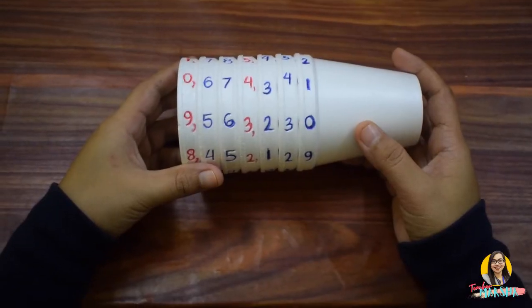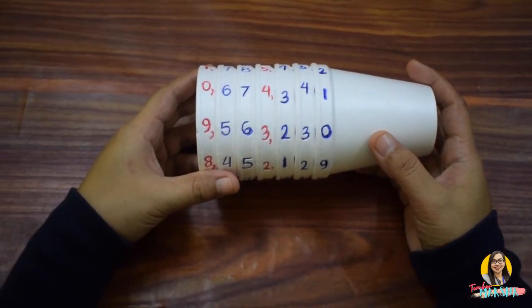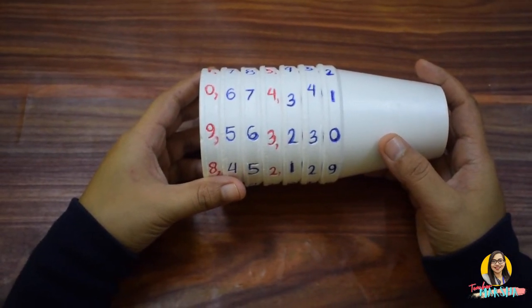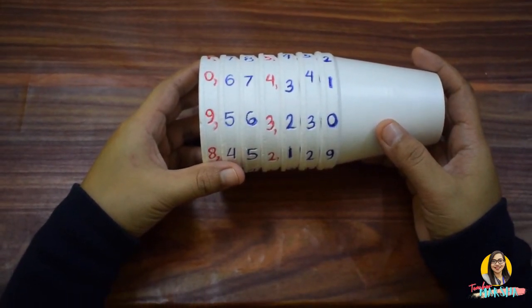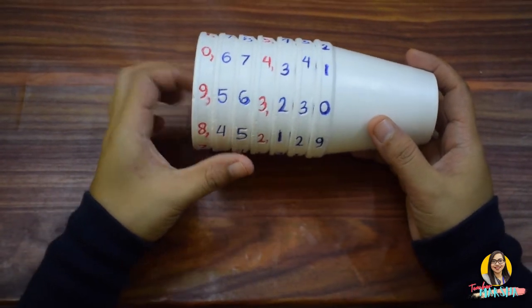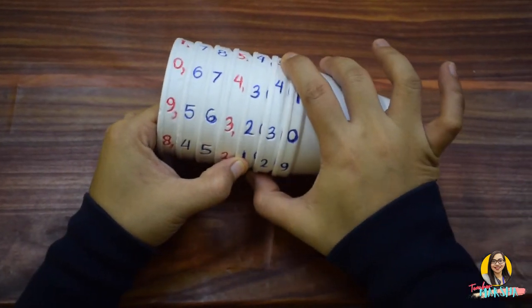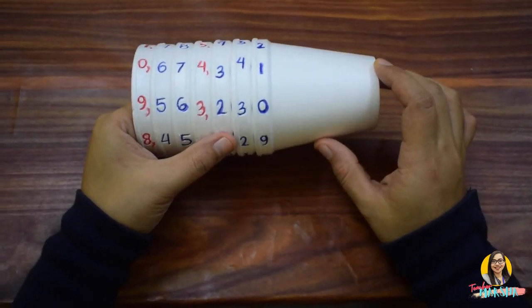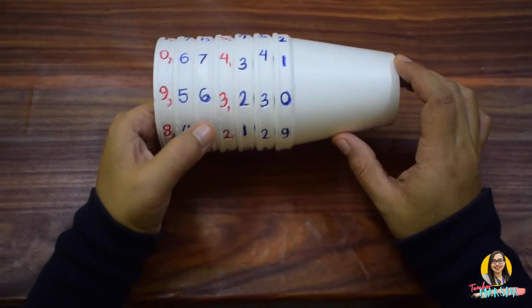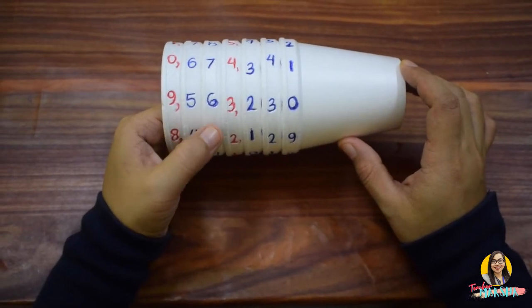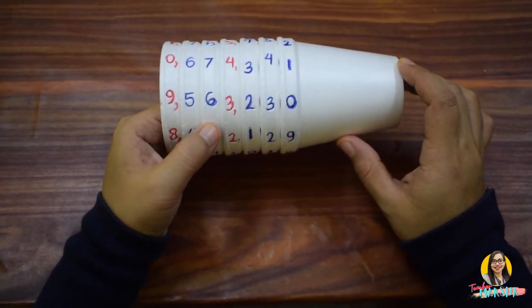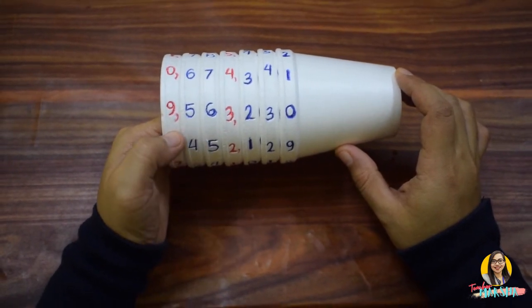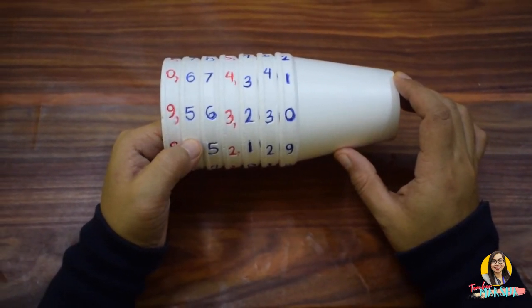This activity is good for all primary students since you can easily differentiate it according to your student's level. For example, for the first grade, you can teach them with reading tens. For the second and third grade, you can teach them hundreds and thousands. For fourth and fifth grade, you can teach them with ten thousands and hundred thousands. And for grade 5 and for grade 6, you can teach them with hundreds and thousands and millions.